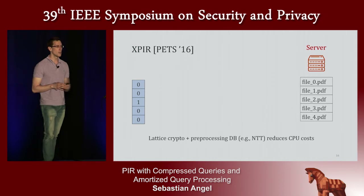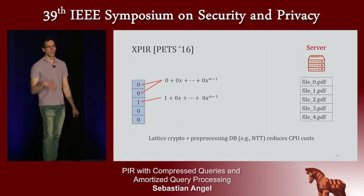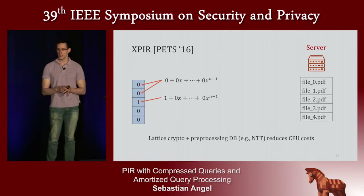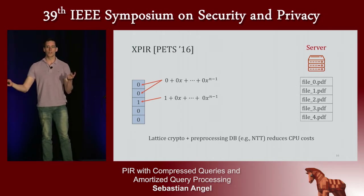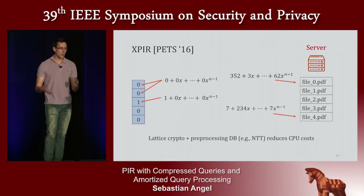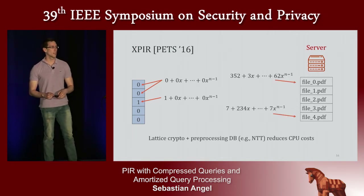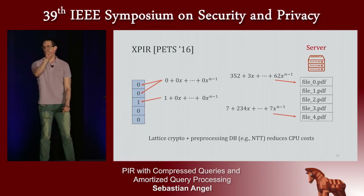In XPIR, the plaintext space consists of polynomials, not integers. Zero is represented as the polynomial with all zero coefficients. One is represented as the polynomial where the constant term is 1 and all other coefficients are zero. Because the plaintext space is polynomials, all files also have to be encoded as polynomials. This encoding is very simple: take the first 20 bits of the file and put them in the first coefficient, the next 20 bits in the next coefficient, and so on.